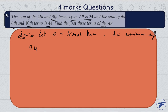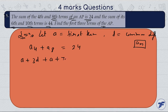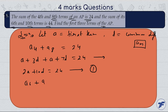According to the given condition, a4 plus a8 is equal to 24. Using the nth term formula, a plus 3d plus a plus 7d is equal to 24. This gives us 2a plus 10d is equal to 24. Consider this as equation number one.